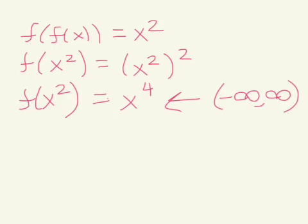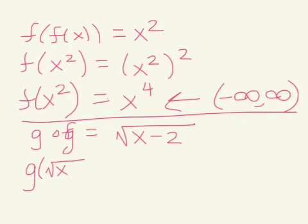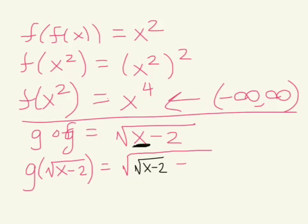For the last problem, we're finding g of g of x. So g comes first — we write down square root of x minus 2. What we're substituting in is also the square root of x minus 2. We take this value of x out and replace it with √(x-2), and then we still have the remaining minus 2. So we get the square root of the quantity (√(x-2) minus 2). You can't simplify that any further, so you leave it.